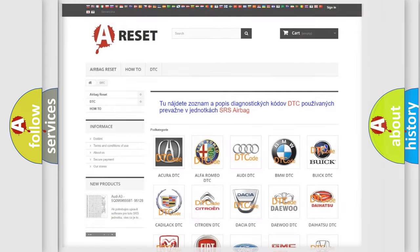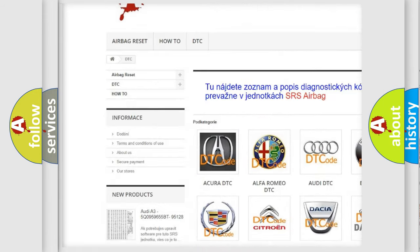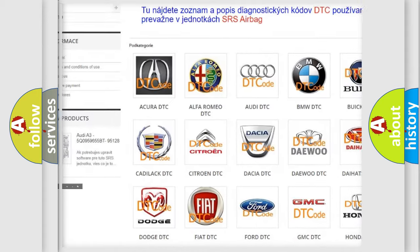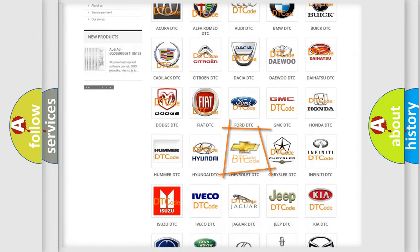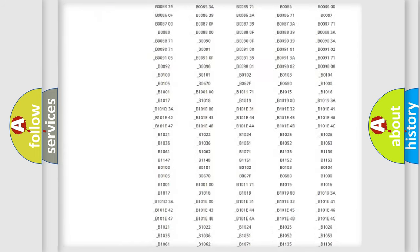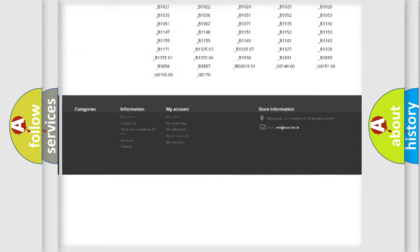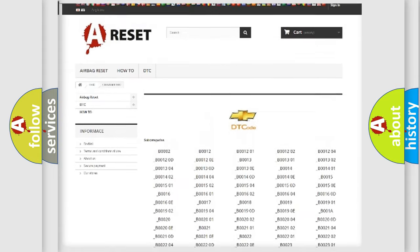Our website airbagreset.sk produces useful videos for you. You do not have to go through the OBD-II protocol anymore to know how to troubleshoot any car breakdown. You will find all the diagnostic codes that can be diagnosed in Chevrolet vehicles, and many other useful things.